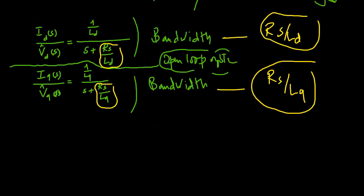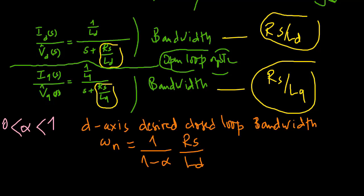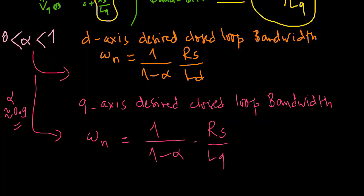Here we can use a parameter to calculate the desired closed loop bandwidth for use in the d-axis current control and for the q-axis current control.